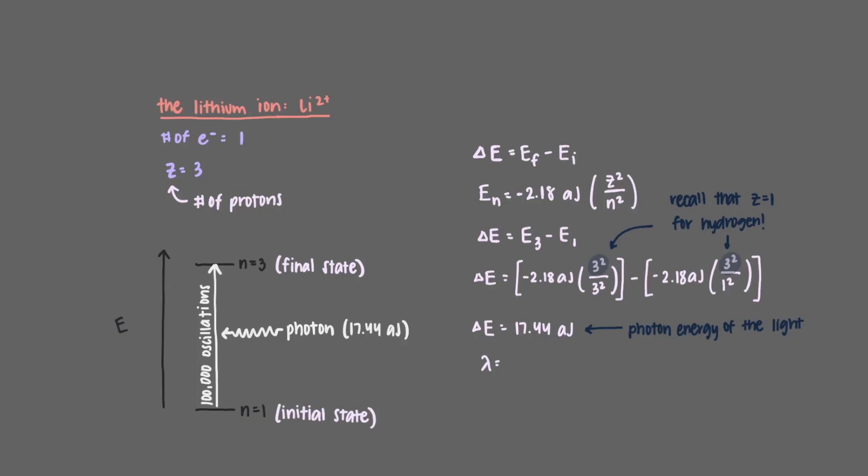The wavelength of this light is 11.4 nanometers. This same transformation for a hydrogen atom 1s electron would require light with photon energy 1.94 attojoules. The wavelength of this light would be 102 nanometers.